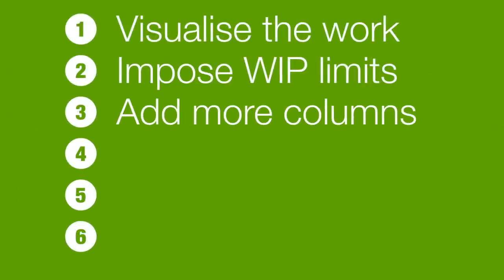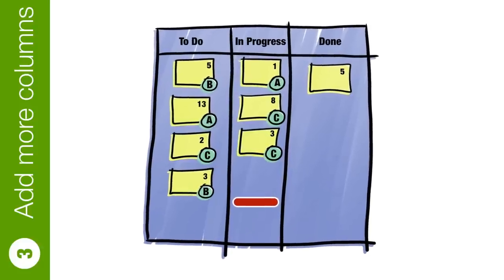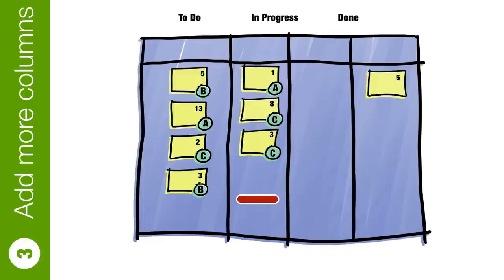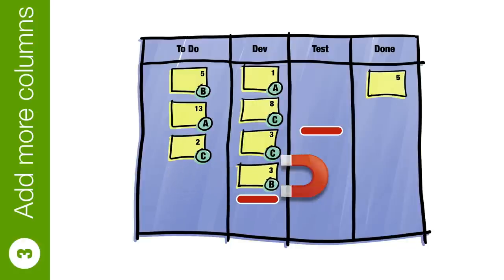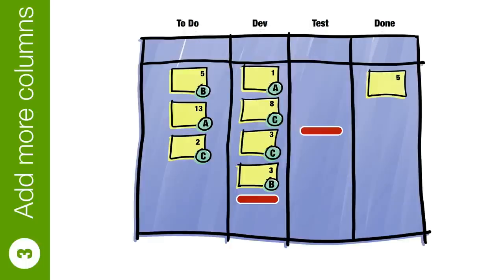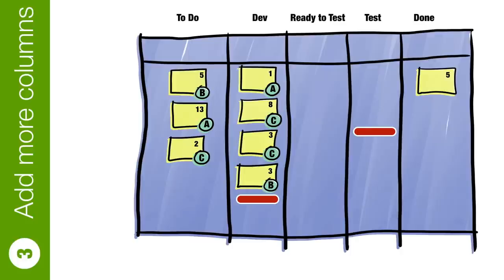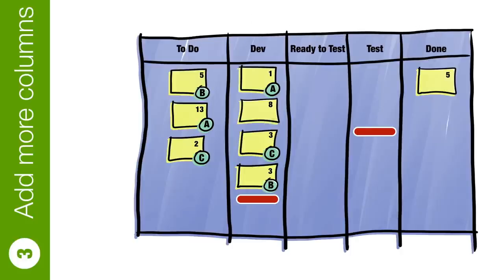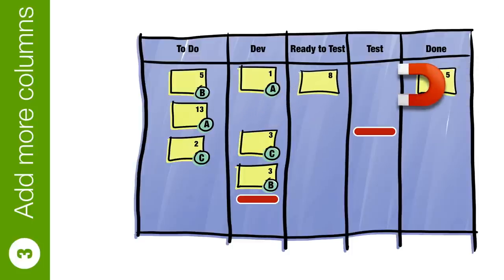Step number three: add more columns. Step one was about visualizing workflows, and that simple board was not a bad start — but for most teams the workflow is a little more involved. Let's replace 'in progress' with a column for development and a column for testing, each with their own work-in-progress limits. Dev pulls from to-do, and test pulls from dev — but as things stand, dev is pushing into test. Let's fix that by introducing a buffer between the two. Now we have a place for developers to put finished cards, and test is empowered to pull tickets in when ready.